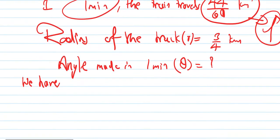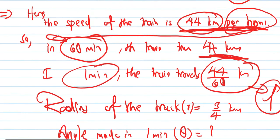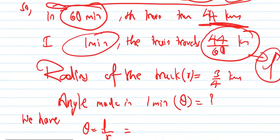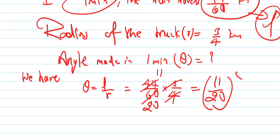So we have 44 by 60, and R is three by four. This gives us 44 times 4 over 60 times 3, which equals 11 by 20 radian.